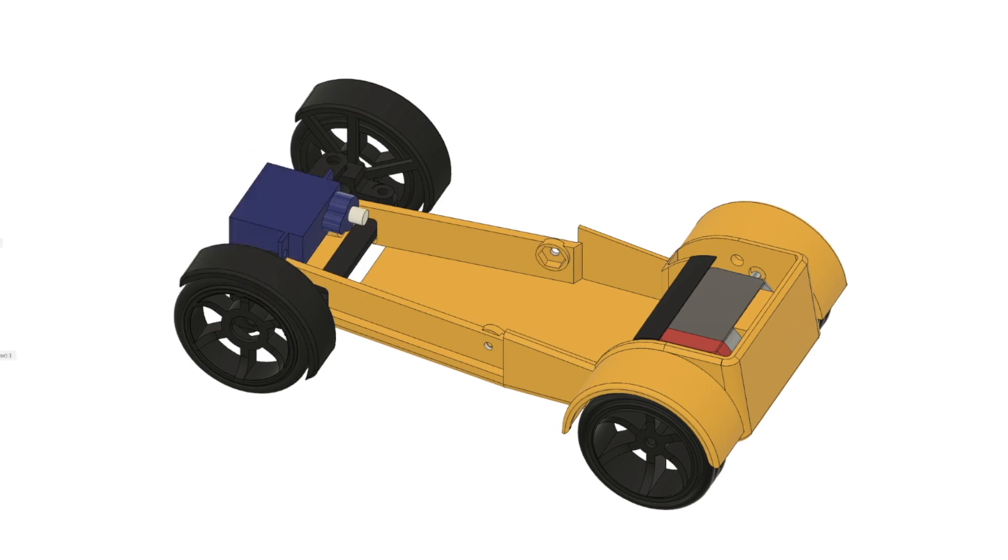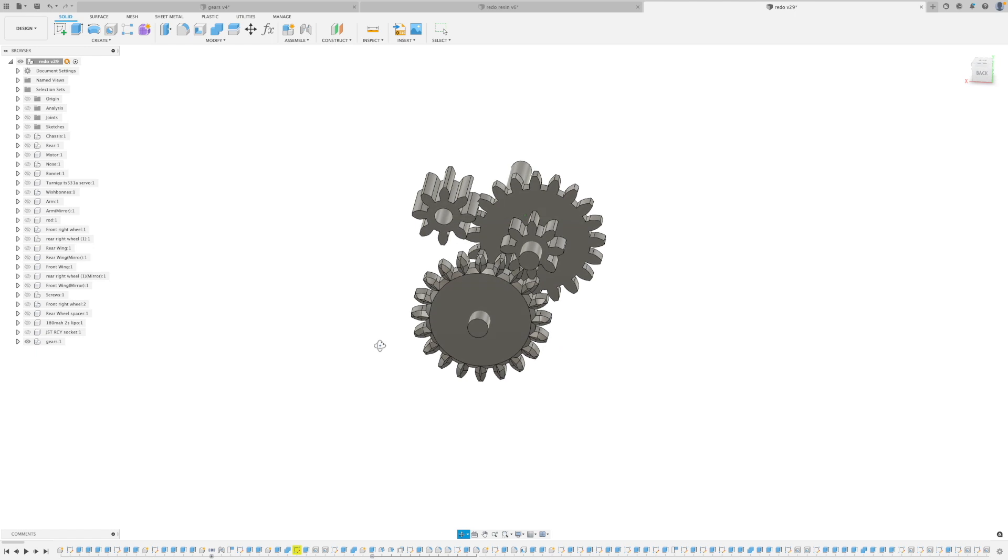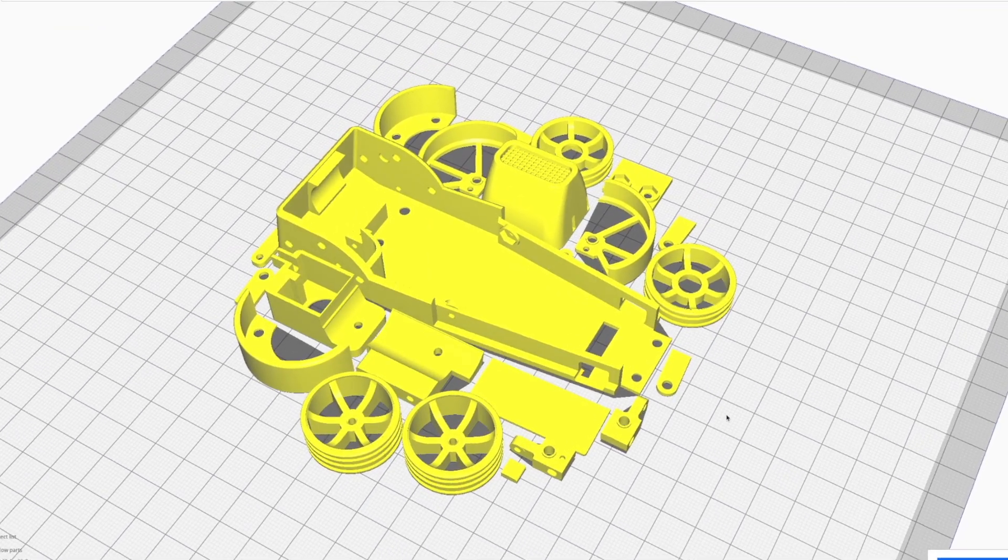I found a servo on Hobby King which would fit into the nose and I designed up some gears to connect the motor to the wheels. Before I knew it, it was all designed and ready to print.